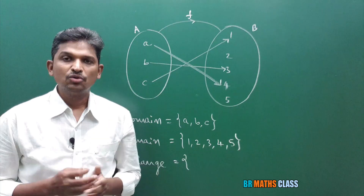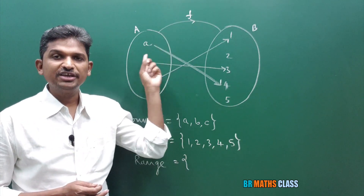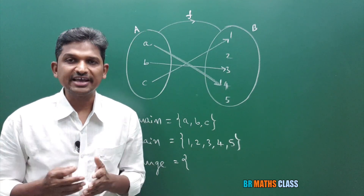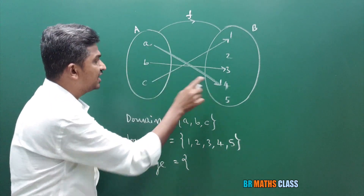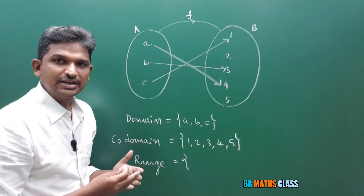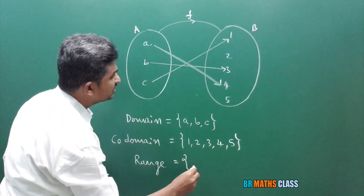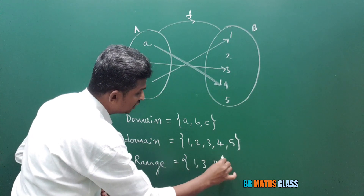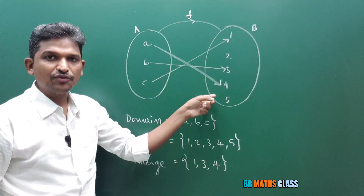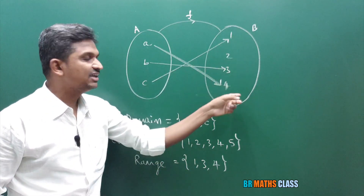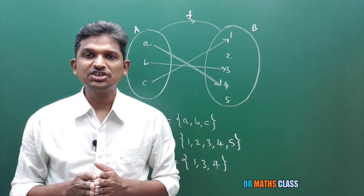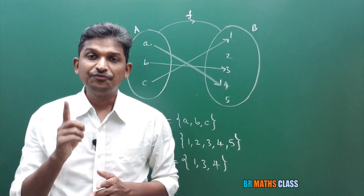What is range? If f from A to B is a function, then the set of all images of set A is called range. Image of a is 4, image of b is 3, image of c is 1. So range is {1, 3, 4}. Here domain is {a, b, c}, codomain is {1, 2, 3, 4, 5}, and range is {1, 3, 4}. Now I am going to take some standard functions and discuss domain and range with the help of graphs.